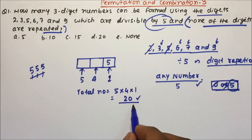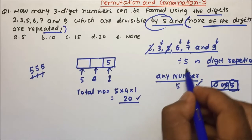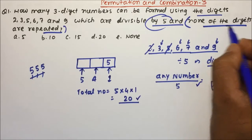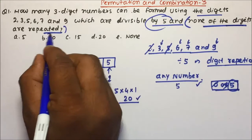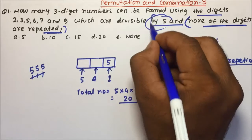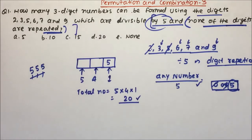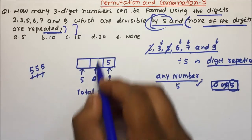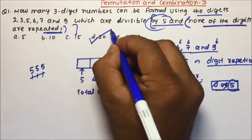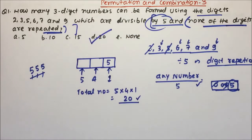So there are 20 three-digit numbers which are divisible by 5 and where no digits are repeated. Both conditions have been covered, so option D is the correct answer for question number 1.